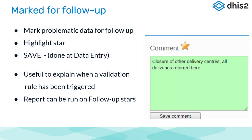This is how marking for follow-up works. When you double-click a data value, you will get a data information window. In the top left-hand corner, you have a space for a comment, and if you click on the star, you can save it — highlight the star and save. This comment and star is useful to explain when a validation rule has been triggered and why the data doesn't look as expected. You can then run the report on the follow-up stars.